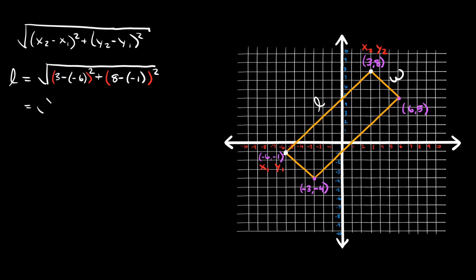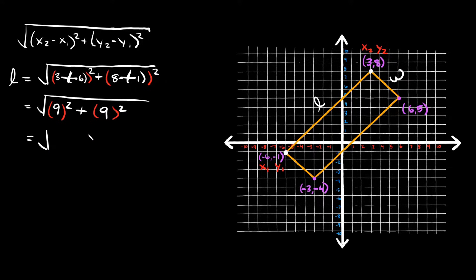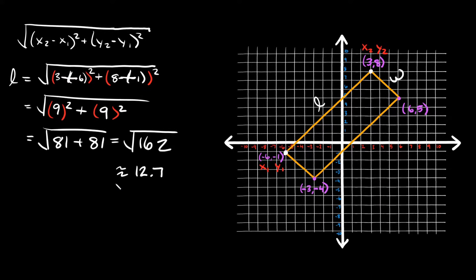So we have the square root of nine squared plus nine squared. Nine squared is 81, so that's the square root of 81 plus 81, which is the square root of 162. Plugging that into the calculator, you get approximately 12.7. So the length is approximately 12.7.